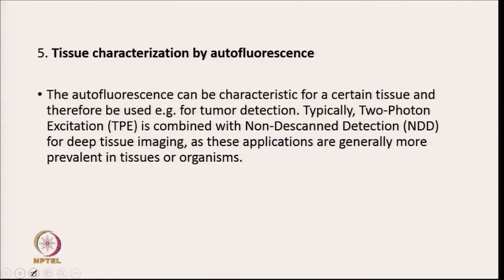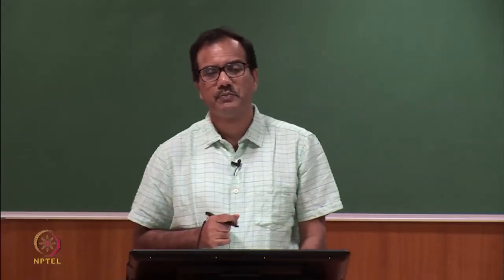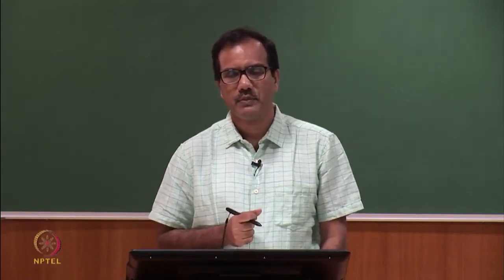Tissue can also be characterized using simple autofluorescence — fluorescence from intrinsic fluorophores. The autofluorescence can be characteristic for certain tissues and can be used for tumor detection. The fluorescence decay time of most endogenous fluorophores depends on binding to proteins, the metabolic state of tissues, oxygen concentration, and other biologically relevant parameters. The fluorescence decay parameters of NADH change with maturation of cells, during differentiation of stem cells, and during apoptosis and necrosis — so FLIM data of NADH and FAD has been used to detect precancerous and cancerous alterations. There are many applications of confocal fluorescence and FLIM, and we will discuss others in the next lecture.